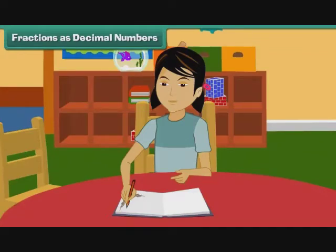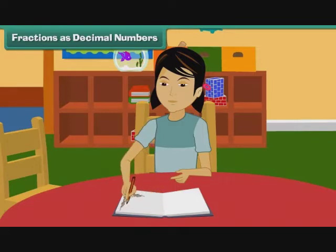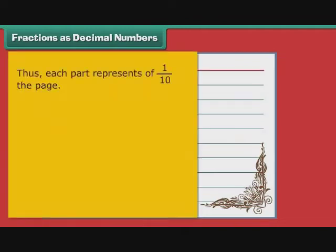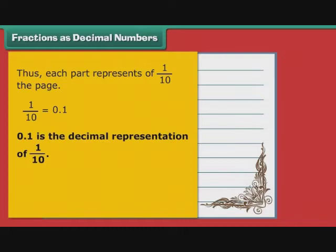Fractions as Decimal Numbers. Arpita is busy decorating the pages of her personal diary. The lines on a page of her diary divide the page into 10 equal parts. Thus, each part represents 1 by 10 of the page. 1 by 10 can also be written as 0.1. Therefore, 0.1 is the decimal representation of 1 by 10.